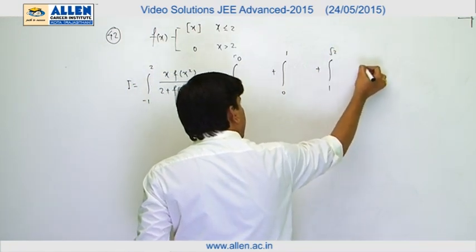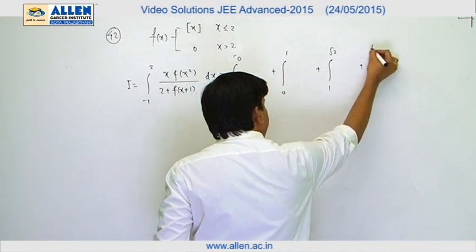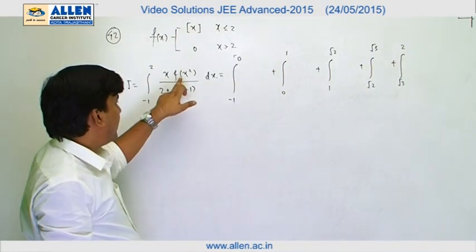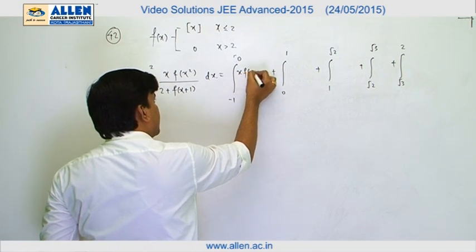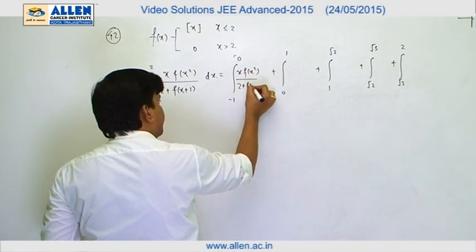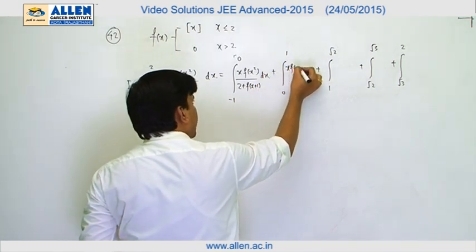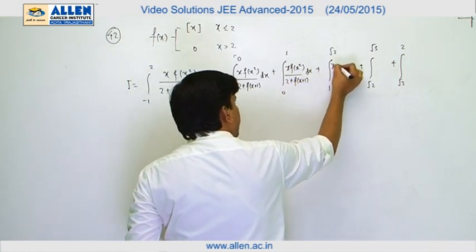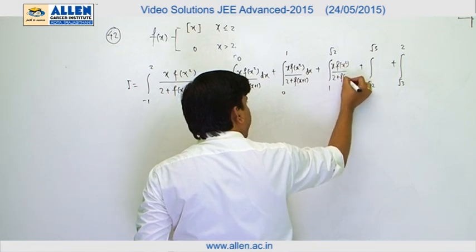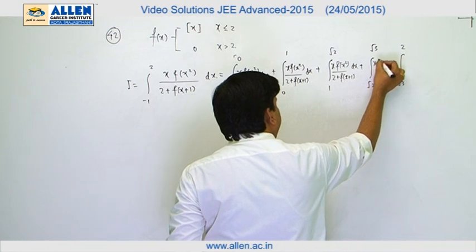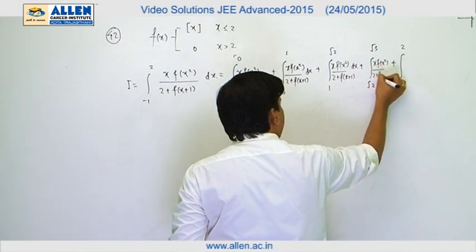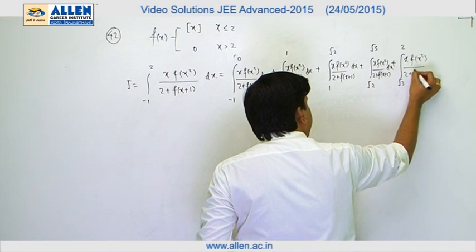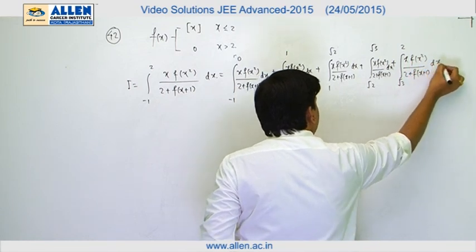The integral is split into the intervals: 1 to √2, √2 to √3, and √3 to 2. In each piece, the integrand takes the form x·f(x²)/2 + f(x²) + 1 dx, and this same structure applies across all the sub-intervals.